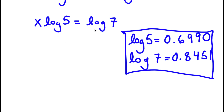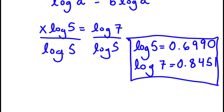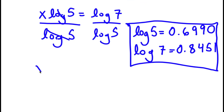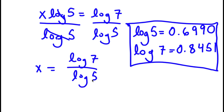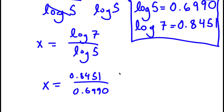So now what I'm going to do is divide both sides by log 5. These two cancel out, and I'm left with x is equal to log 7 over log 5. I know that log 7 is equal to 0.8451, and log 5 is equal to 0.6990. So now I have 0.8451 over 0.6990, which is equal to 1.2090.